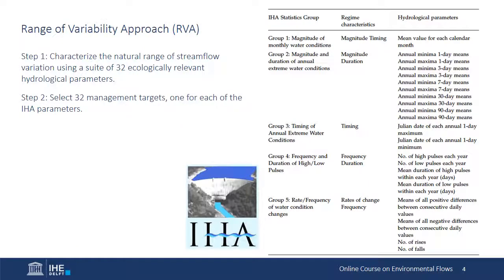The Range of Variability Approach, like the percent of flow approach, is intended for application in river systems where environmental objectives include conservation of native aquatic biodiversity and protection of natural ecosystem functions. But it's structured to take advantage of IHA parameters to define management targets based on the full range of ecologically relevant components of the natural flow regime.